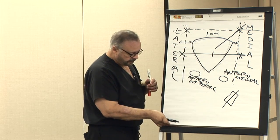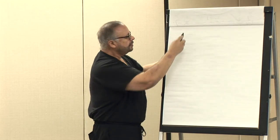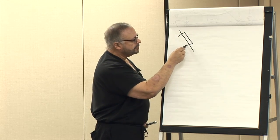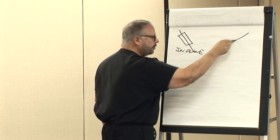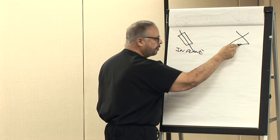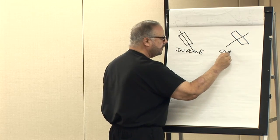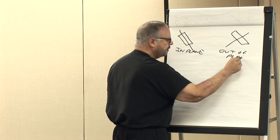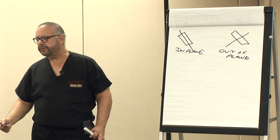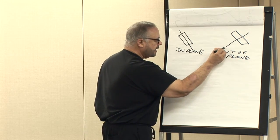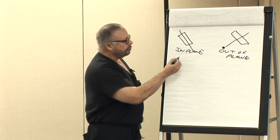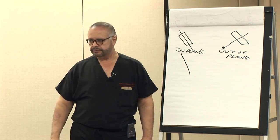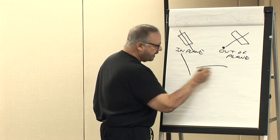Let me show you right over here. If my needle comes in here and my ultrasound probe is right here, this is called in-plane. If my needle comes over here but my ultrasound probe is oriented differently, this would be out-of-plane. When it's out-of-plane, all you see is a dot. When it's in-plane, you will actually see the needle penetrating tissue.